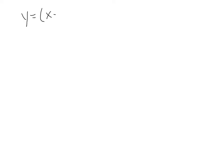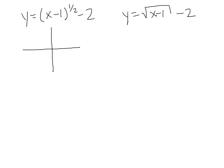Let's bring in some fractional powers. We have y = (x - 1)^(1/2) - 2, which is the same as y = √(x - 1) - 2. Using transformations, it's been shifted to the right 1 and shifted down 2. A square root graph sort of looks like half a parabola. Since this has a fractional exponent, it is neither even nor odd.